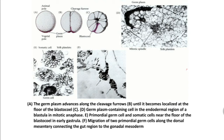From the dorsal mesentery, these primordial germ cells migrate to the genital ridges and to the respective gonads, where they differentiate into germ cells or gametes — either sperm or ova.